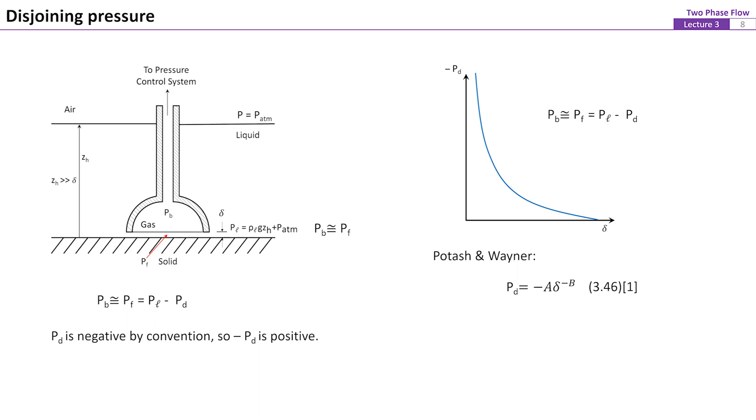Since the attractive forces between liquid molecules and the solid surface decreases with increasing the distance of liquid molecules away from the solid surface, the required disjoining pressure difference to overcome this attractive force will decrease with increasing the thickness of the liquid film. This tendency could be approximated by relation like equation 46.